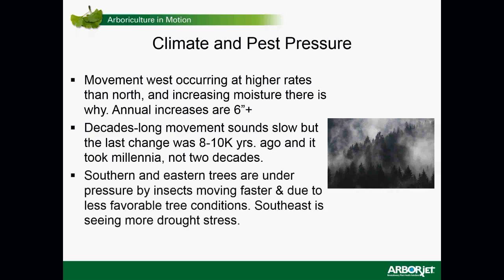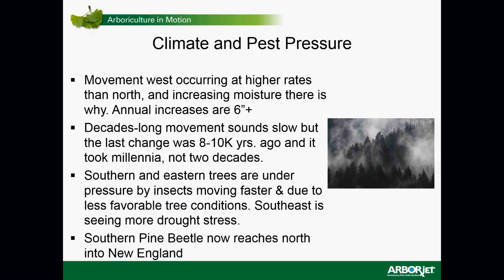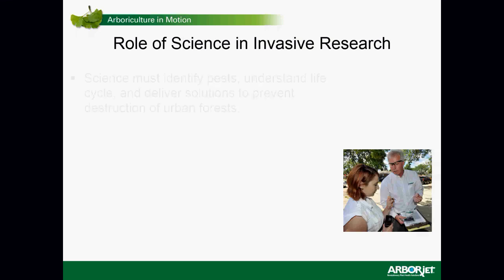Southern and eastern trees are under pressure by insects moving faster and due to less favorable tree conditions, because the Southeast is seeing more drought stress and higher temperatures. As an example, the southern pine beetle — for those not from the Northeast — is now reaching into northern New England. This is a serious problem that we never saw north of Virginia just a decade ago.